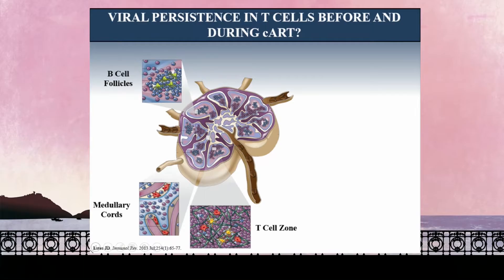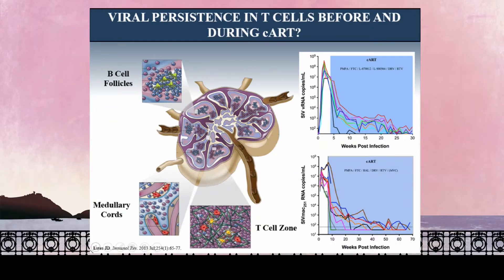Where is the virus persisting within the lymph node both before and during antiretroviral therapy, and where are the cells actively producing virus? This cartoon shows the different anatomic structures of the lymph node: B cell follicles in the cortex, the T cell zone juxtaposed to the B cell follicles, and medullary cords. With these in situ hybridization approaches, we're able to identify not only the cell type but also their location and phenotype within these different regions.